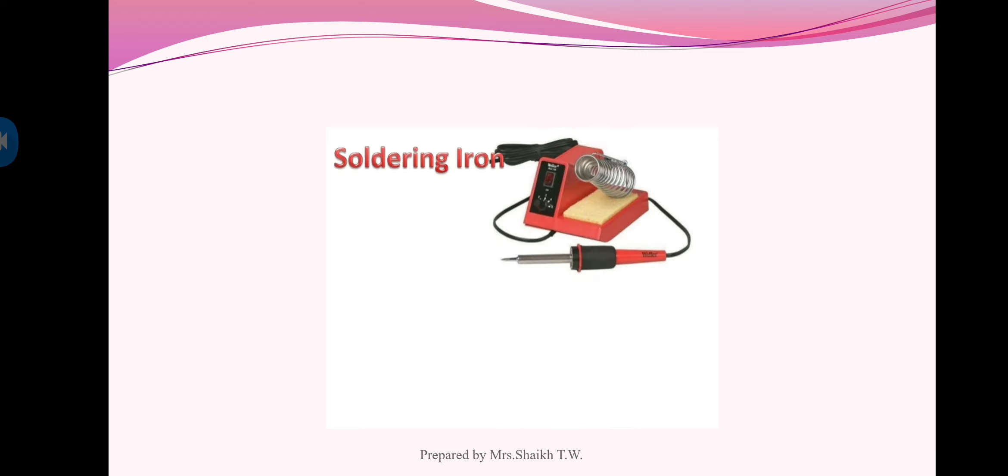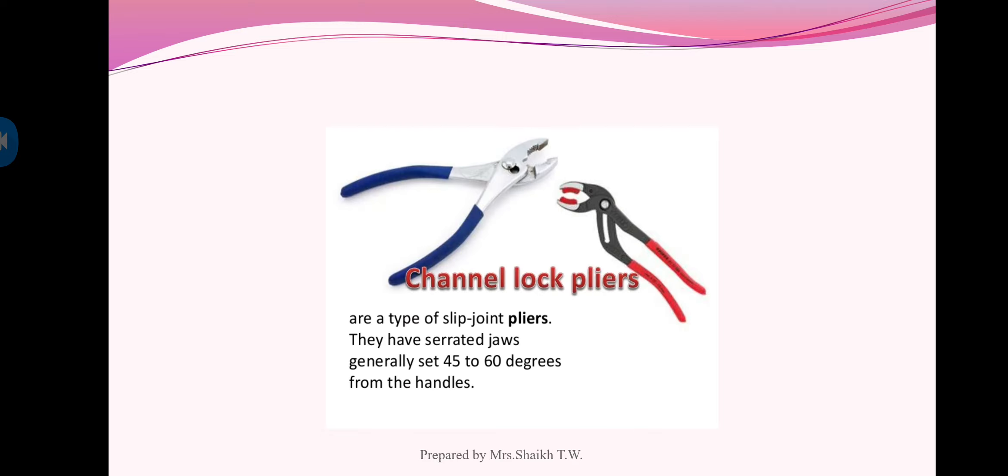Next one is electric soldering iron. Soldering iron is used for soldering purpose. Next is channel lock pliers. The figure shows the channel lock pliers are a type of slip joint pliers. They have serrated jaws, generally set 45 to 60 degrees from the handles.